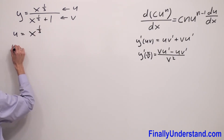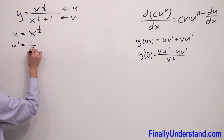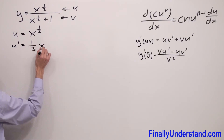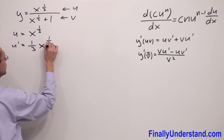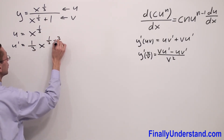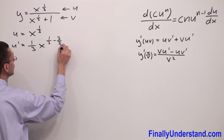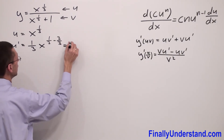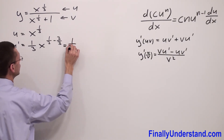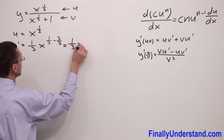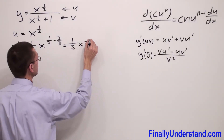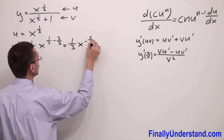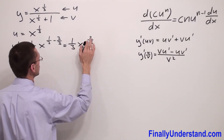The derivative of u is equal to 1 third x to the power 1 third minus 3 over 3, which is equal to 1 third x to the negative 2 thirds.